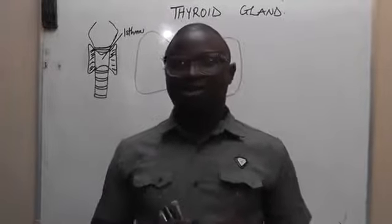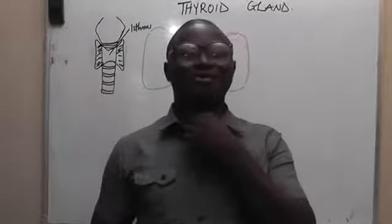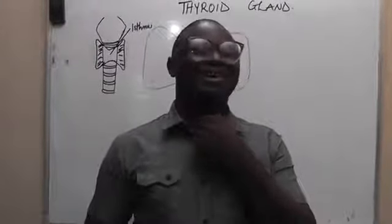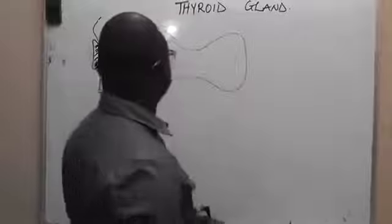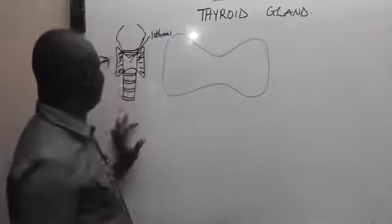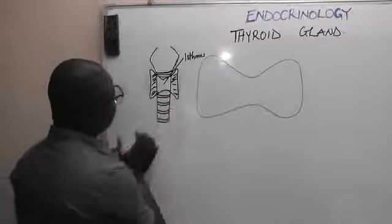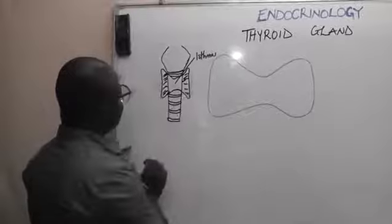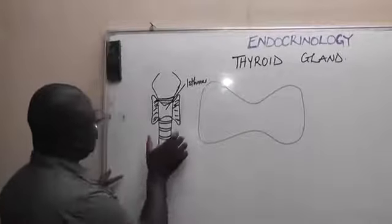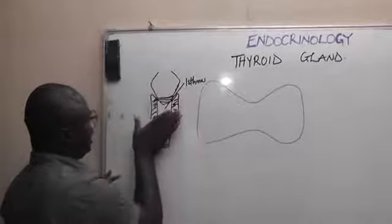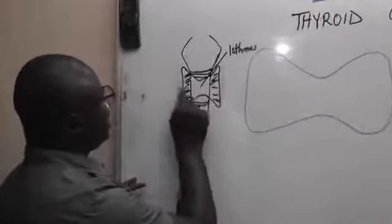The thyroid gland is one of the endocrine organs or glands. It is situated in the neck, below the larynx and in front of the trachea. Looking at this diagram, this is the larynx, this is the thyroid gland, and this is the trachea — so the thyroid gland is located below the larynx and in front of the trachea.